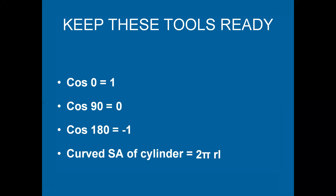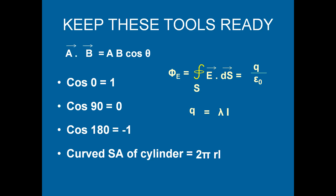Before we start the derivation, let us keep these values in mind because we are going to use them: cos 0° = 1, cos 90° = 0, cos 180° = −1. Curved surface area of a cylinder is 2πrl. Dot product of two vectors is ab cosθ, where θ is the angle between vectors a and b. The mathematical expression of Gauss's theorem is φ = ∮E·dS = q/ε₀, and q = λl, where λ is the linear charge density.